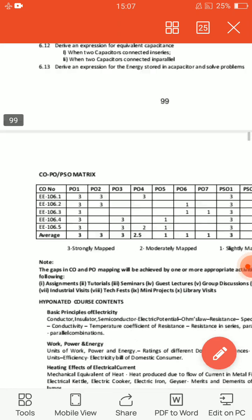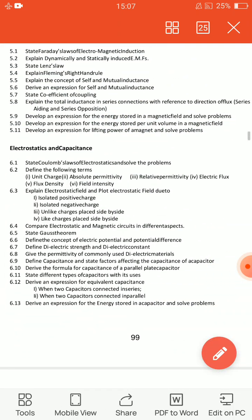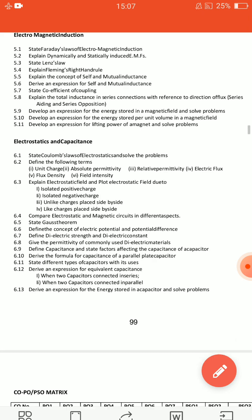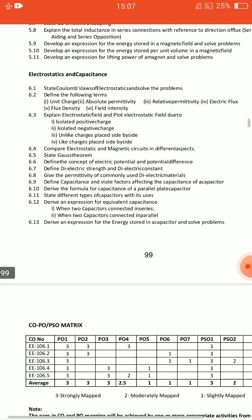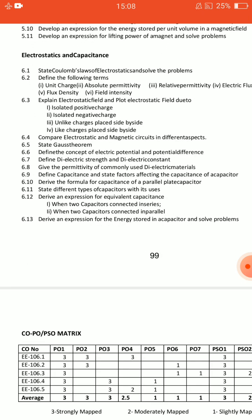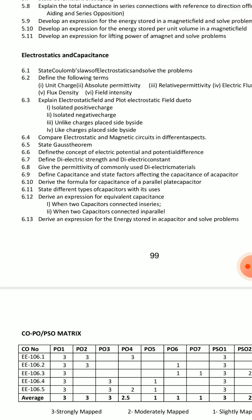So it is units 4, 5, 6. First of all, you should read electrostatics and capacitance — you have an essay question and a short answer question. In the last unit, the main question you have to choose is: Derive an expression for the energy stored in a capacitor.